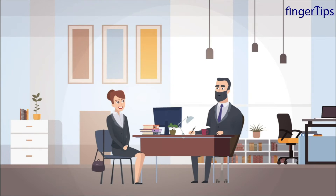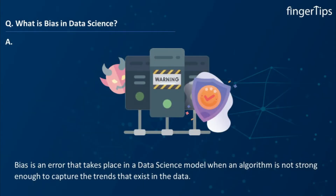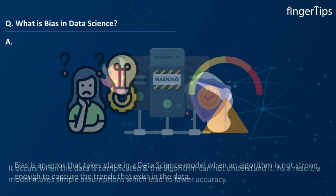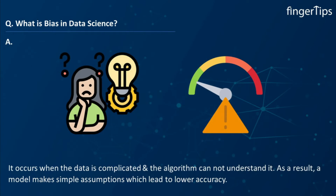Can you explain what bias is in data science? Bias is an error that takes place in a data science model when an algorithm is not strong enough to capture the trends that exist in the data. It occurs when the data is very complicated and the algorithm is not able to understand it. As a result, a model is built that makes simple assumptions, which may lead to lower accuracy. Linear regression and logistic regression are some of the algorithms that can lead to high bias.